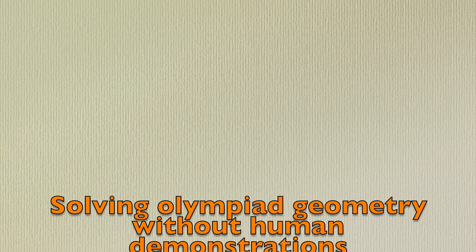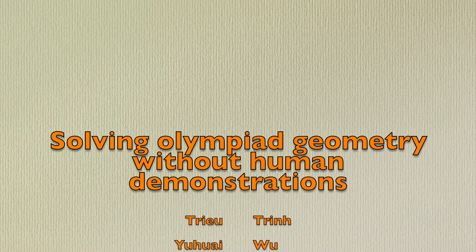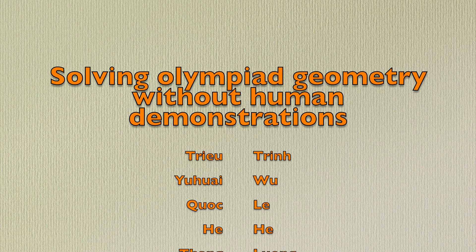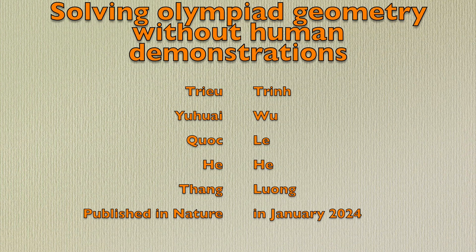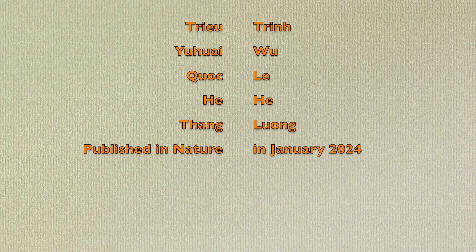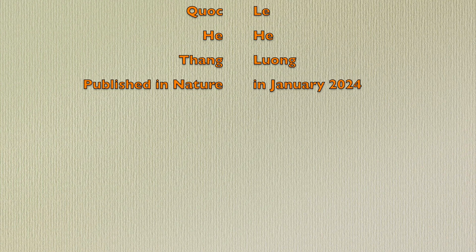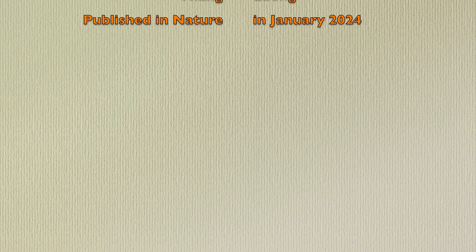And today we are going to explore a purely practical paper on neuro-symbolic learning which has made waves recently. Today's paper is titled Solving Olympiad Geometry Without Human Demonstrations. It has been written by Trieu Trinh, Yuhuai Wu, Quoc Le, He He and Thang Luong and was published earlier this month in mid-January 2024 in Nature.